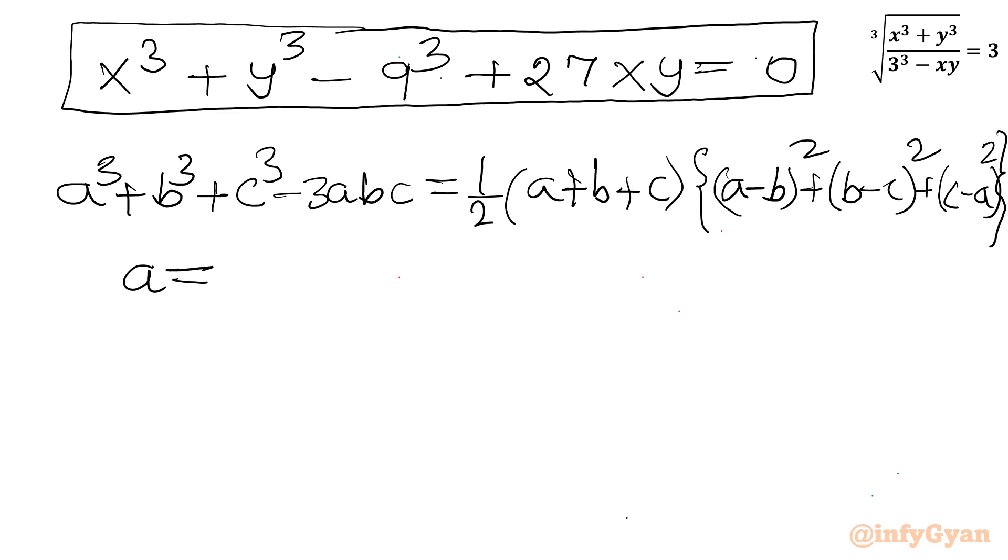So now I will provide substitution A equal to x, B equal to y and C equal to negative 9. See what will come out. So I will be writing x cube plus y cube plus minus 9 cube. So let me write here minus 9 cube and then minus 3 A B C. Let us write minus 3 x y minus 9.